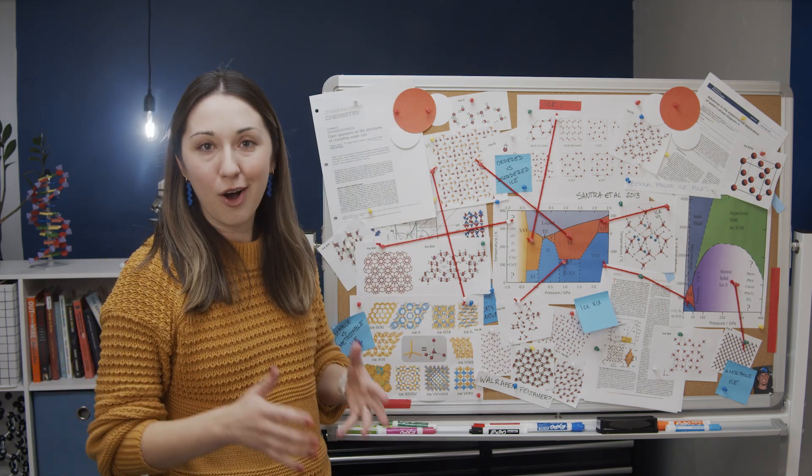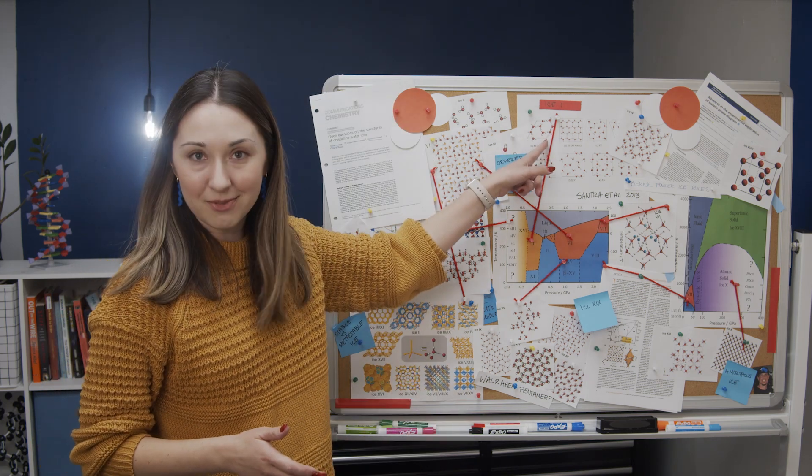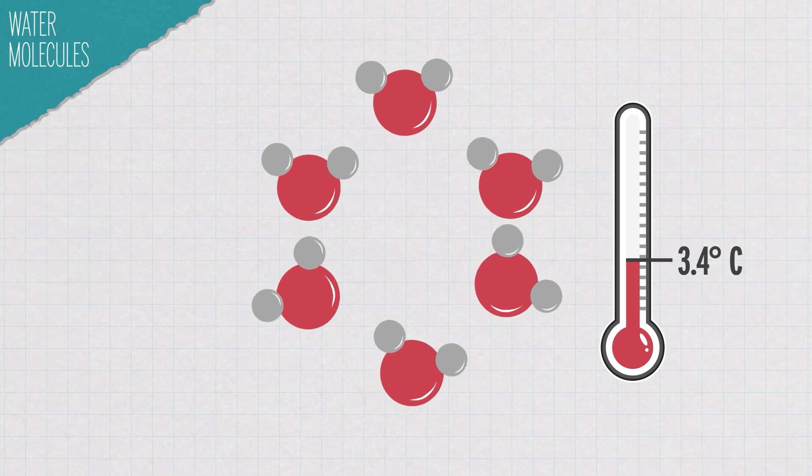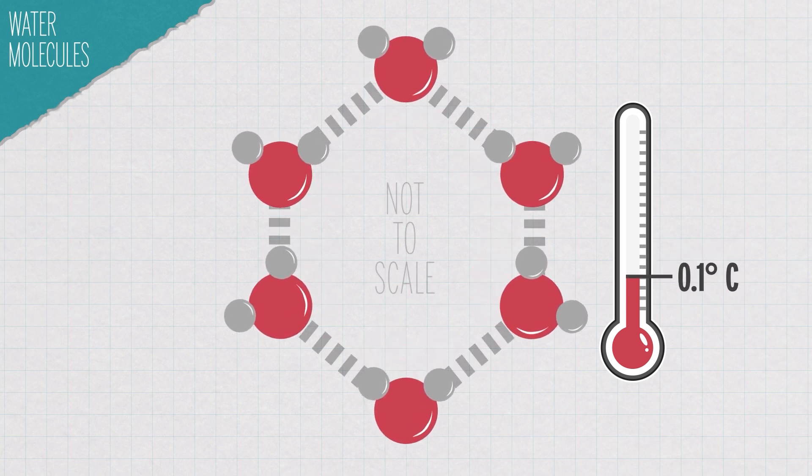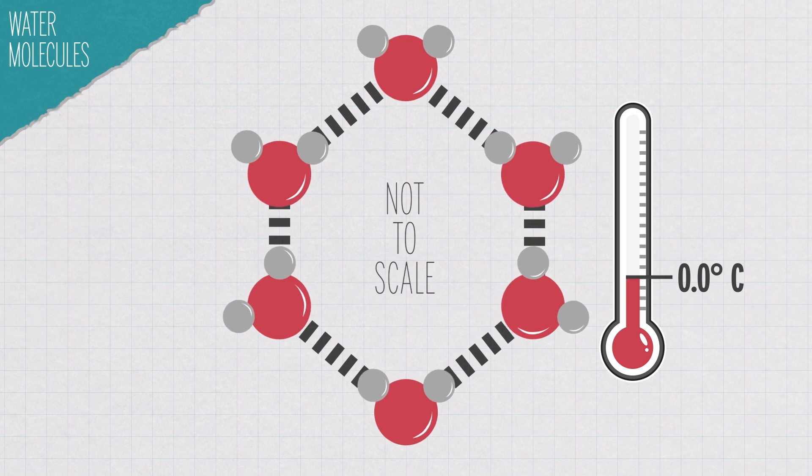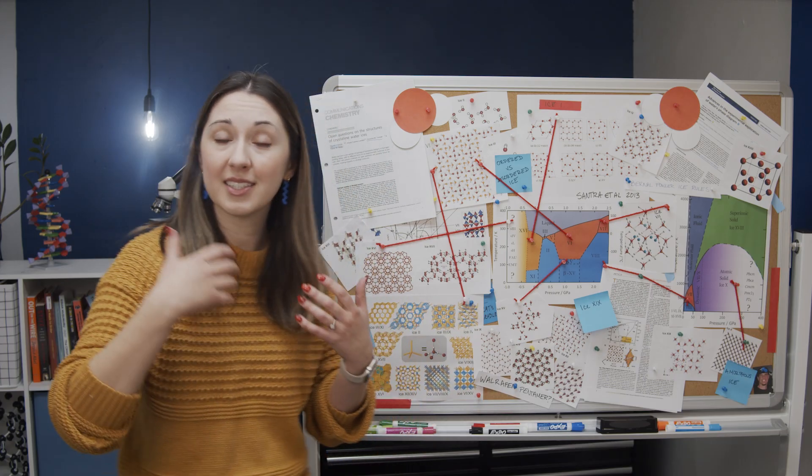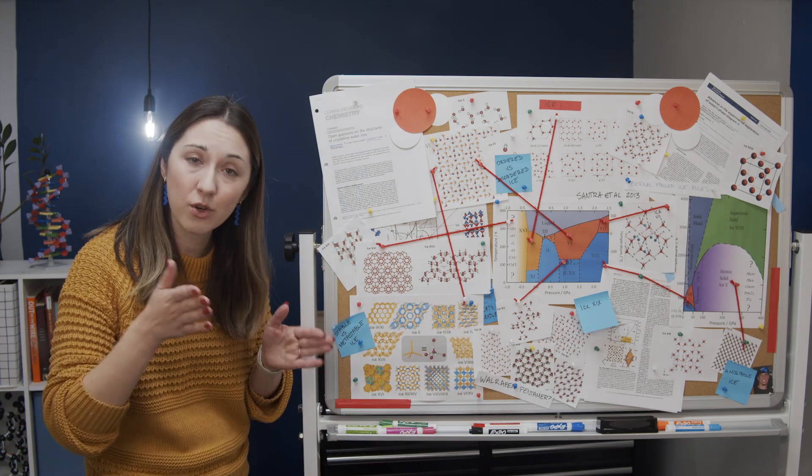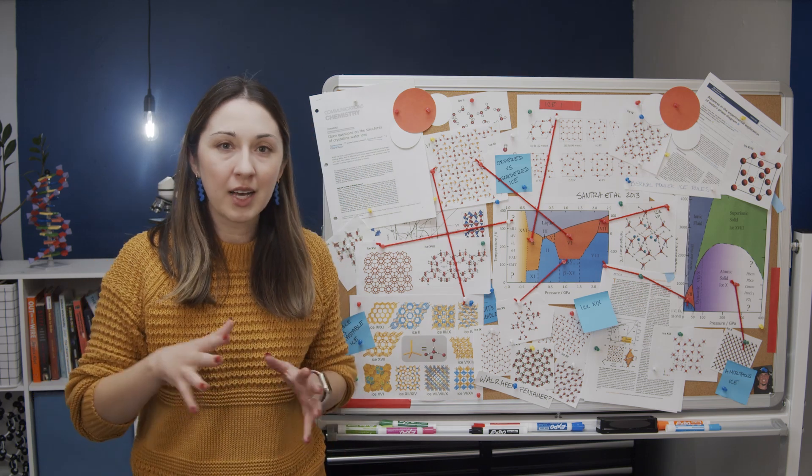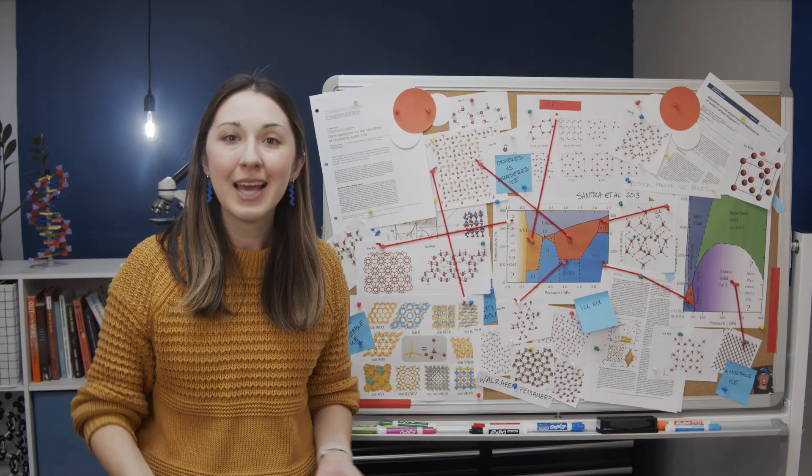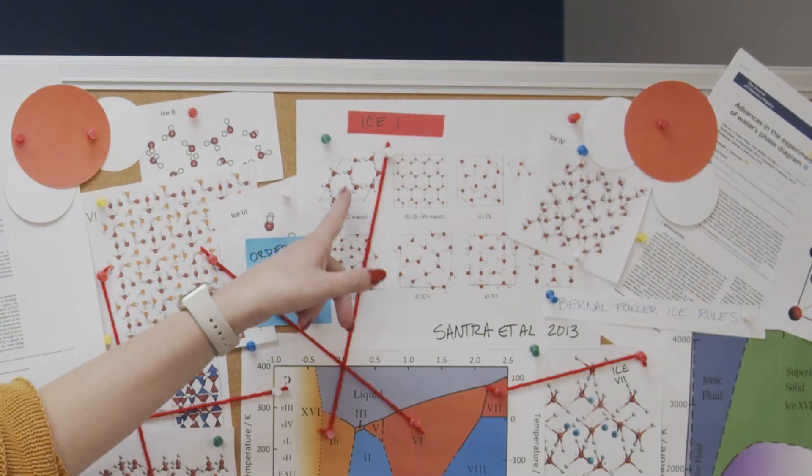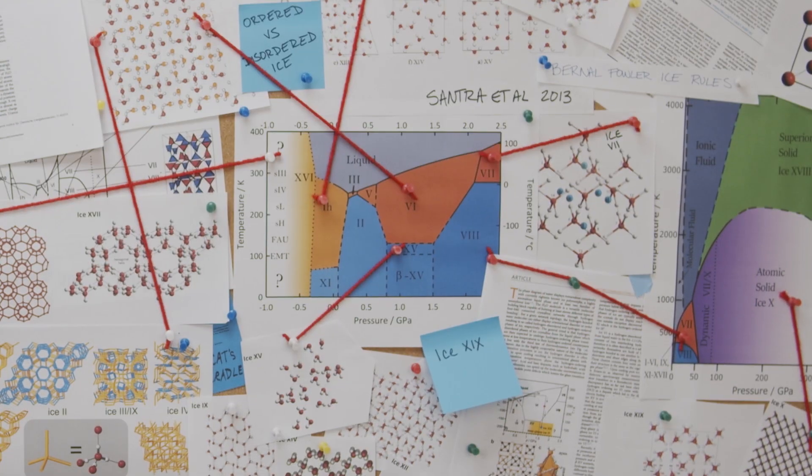Let's start with the ice that we're all pretty familiar with. Ice one. If you take liquid water at normal atmospheric pressures and cool it to zero degrees Celsius, it'll align itself into hexagonal crystalline structures. Ice is actually considered to be a mineral because it is a naturally occurring solid with an ordered structure. Pretty much all ice in the biosphere is this kind of hexagonal ice one, also called ice one H.